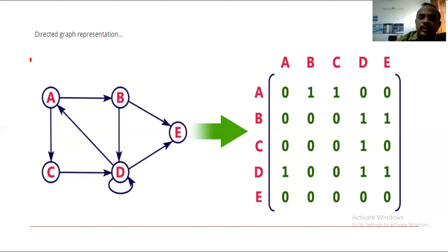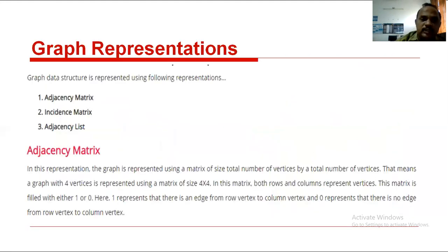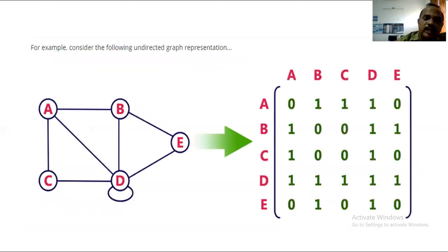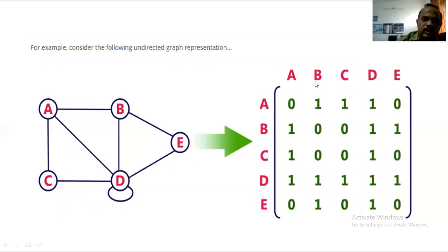This matrix is called the adjacency matrix. In your final examination, you should be able to write and explain graph representations, how many types exist, and explain the adjacency matrix. If the graph has five vertices, use a 5×5 matrix; four vertices gives a 4×4 matrix; six vertices gives a 6×6 matrix.